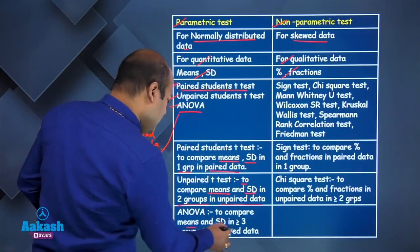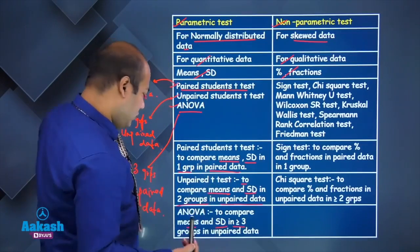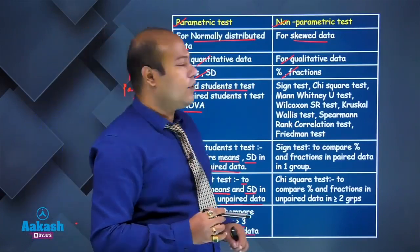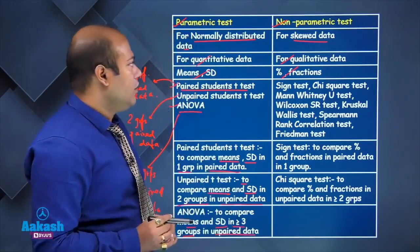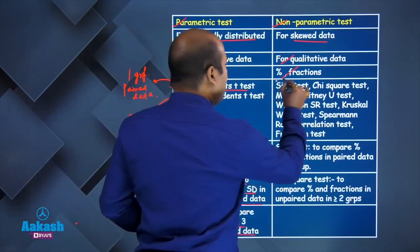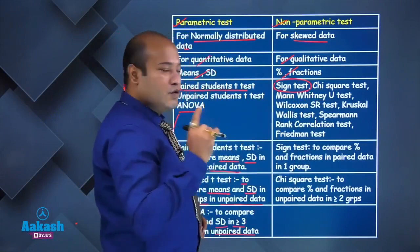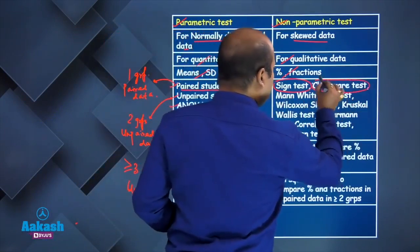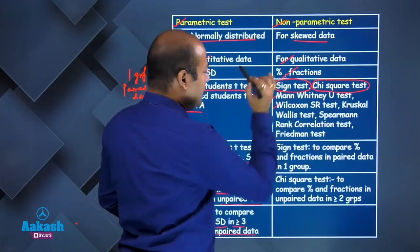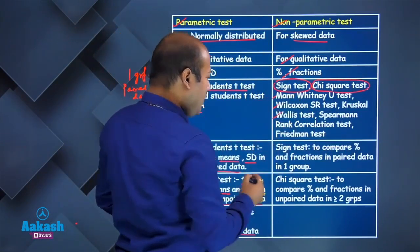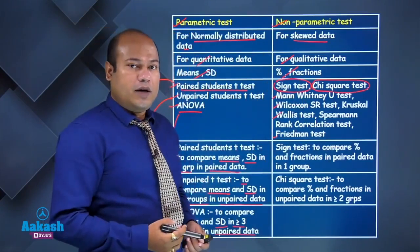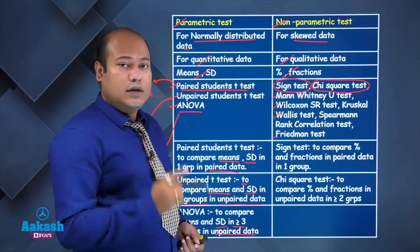Analysis of variance compares means and standard deviation in three or more groups with unpaired data. Coming to the types of non-parametric tests, the two most important are the sign test and the chi-square test. Other examples include Mann-Whitney's test, Wilcoxon test, Kruskal-Wallis test, Spearman's test, and Friedman's test.